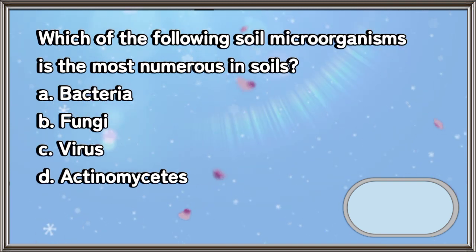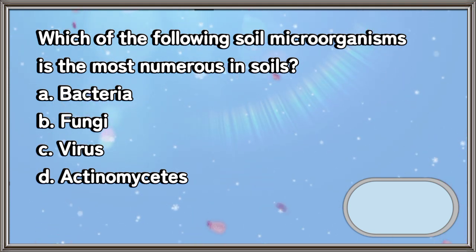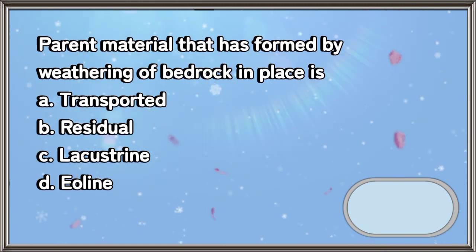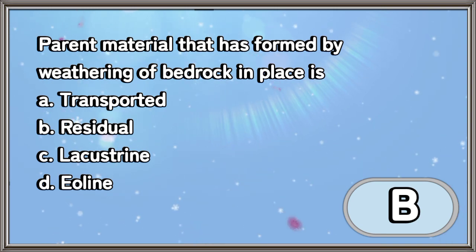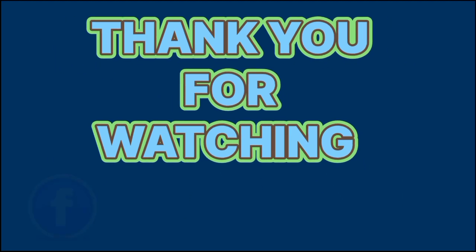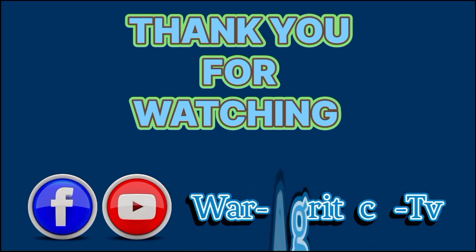Which of the following soil microorganisms is the most numerous in soils: a) bacteria, b) fungi, c) virus, d) actinomycetes. The answer is letter A. Parent material that has formed by weathering of bedrock in place: a) transported, b) residual, c) lacustrine, d) aeoline. The answer is letter B. Thank you for watching. For more videos, follow our Facebook page and subscribe to our YouTube channel, WAR Agritech TV.